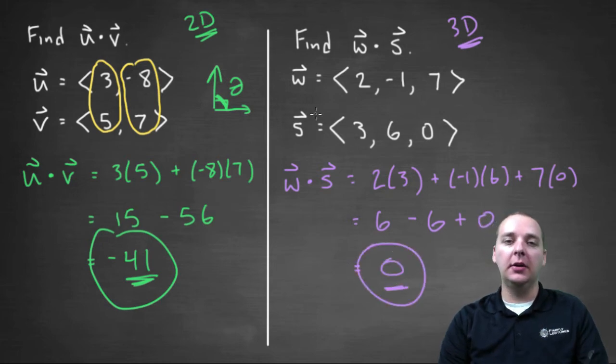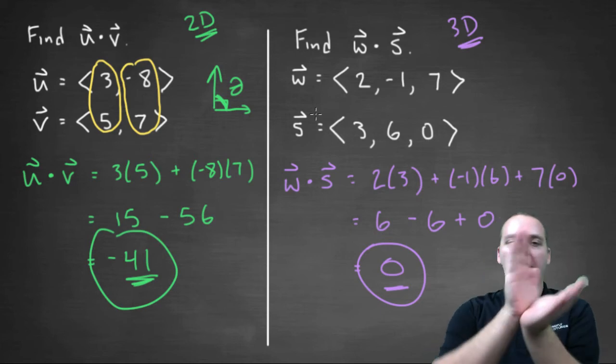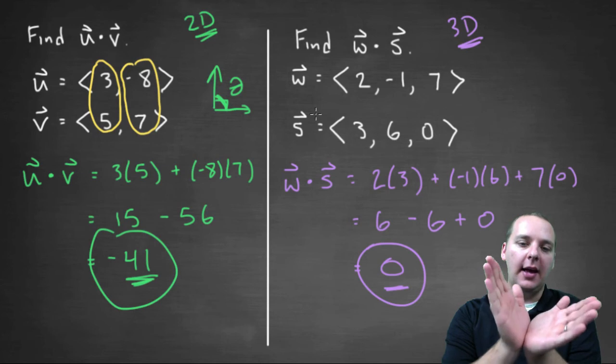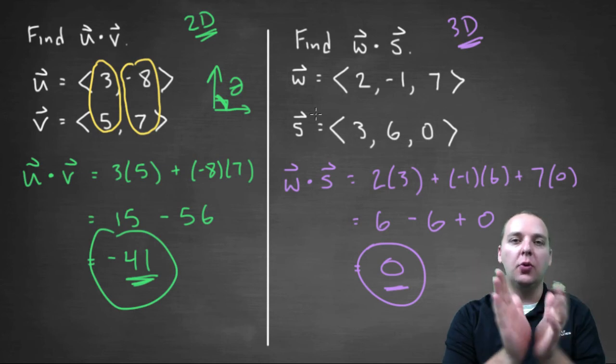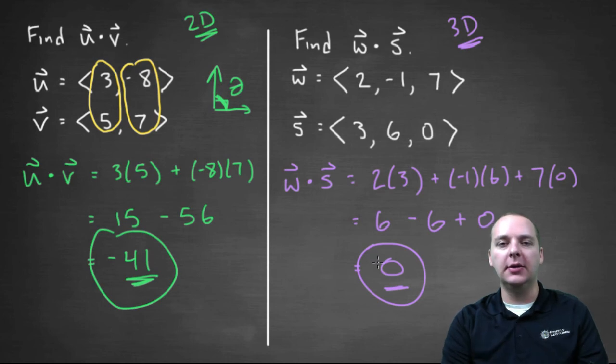So these guys' dot product is zero. Now what does that mean? Well, since the dot product was equal to zero, those two vectors, however they're oriented in three-dimensional space, they meet at a right angle. These two guys are orthogonal, and I know that again because the dot product is zero.